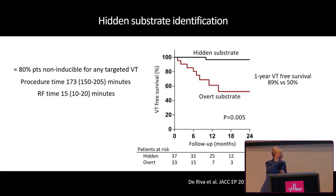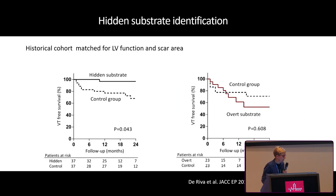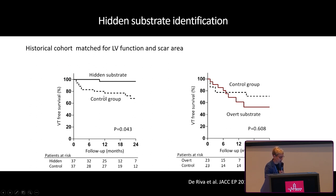The hidden substrate group did much better in outcomes, with procedure time under three hours and RF time of 15 minutes. However, this is not a fully honest comparison—those with overt substrate had poor function, large and dense scars, and more frequent clinical heart failure. A propensity-matched analysis against prior patients not receiving this approach, matched for LV function and scar area, showed that in particular those with smaller scars had better outcomes. Patients with overt substrate did not show much additional benefit from the functional substrate mapping approach.